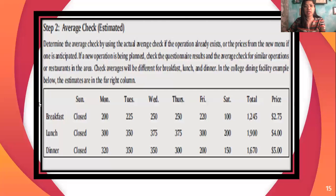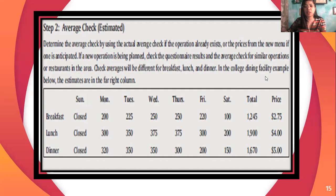For the average check estimate: in order to determine the average check, use the actual average check if the operation already exists — that's one way. Or use the prices from the new menu if one is anticipated — that's another. If a new operation is being planned, check the questionnaire results and the average for similar operations or restaurants in the area. Check averages will be different for breakfast, lunch, and dinner — the facility example below shows estimates in the right column, with the total number of customer counts and the average check per customer.